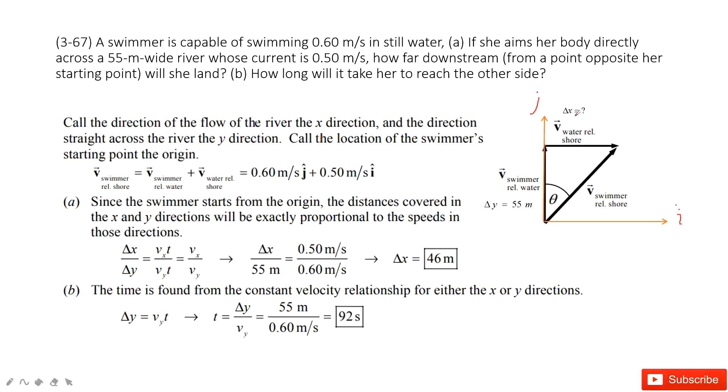We can use the similar triangle rule. We see this side is 0.6 and this side is 0.5, so we consider this is a similar triangle. We use ΔX divided by ΔY equals the velocity of water relative to the shore divided by the velocity of swimmer to the water. This gives us 0.5 over 0.6, and we get it.